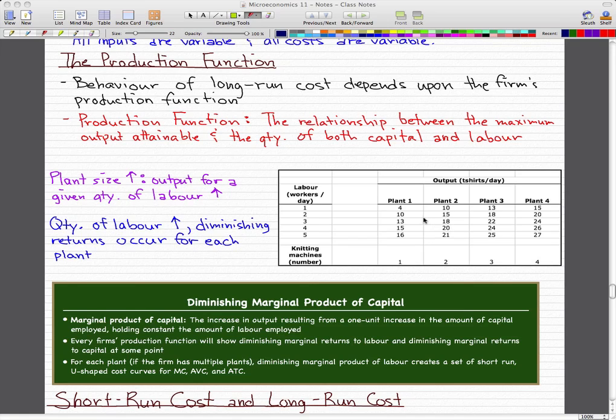Finally figured out what the heck was going on here. So what's happening is, let me change my pen. Let's take a look at three laborers or workers per day. At plant one, we have one knitting machine. And with one knitting machine and three workers,